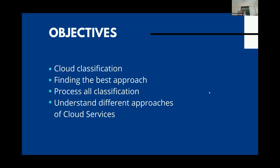In the deployment model, there are four types of cloud model: public model, private model, hybrid, and community model. The service model includes IaaS, PaaS, SaaS, and UCaaS — unified communication as a service.